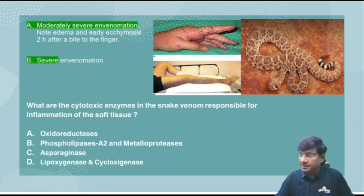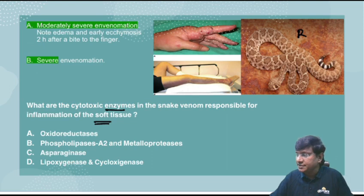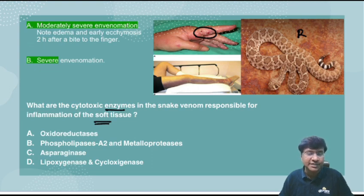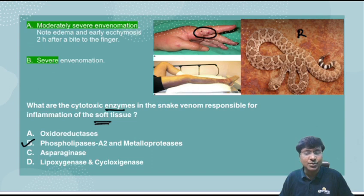The first question is: what are the cytotoxic enzymes in snake venom responsible for inflammation of soft tissue? Here we can observe a rattlesnake — when a rattlesnake bites an individual, you can see swelling of the soft tissue. The options are oxidoreductases, phospholipase A2 and metalloproteases, asperginase, lipoxygenase, and cyclooxygenase. The answer is phospholipase A2 and metalloproteases.